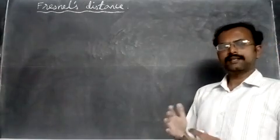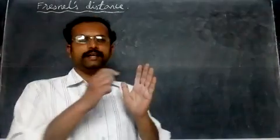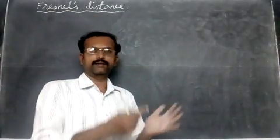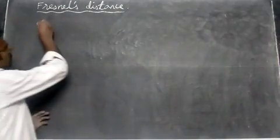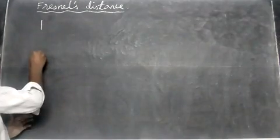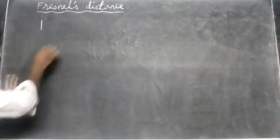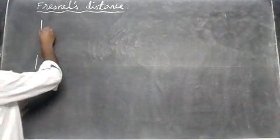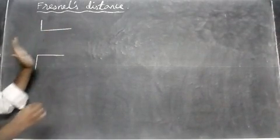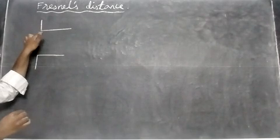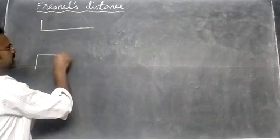Let us study the single slit experiment one more time. When light goes through a slit, it will bend — there's a diffraction happening. So we have a single slit here and light goes from left to right. Light normally goes in straight lines, but at the slit there is a diffraction occurring.